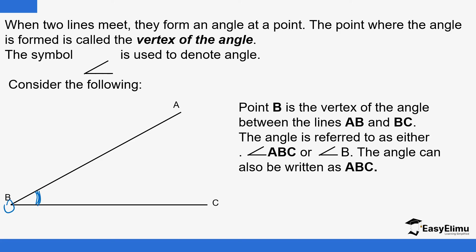The symbol is used to denote an angle. In the example, point B is the vertex of the angle between AB and BC, and the angle is referred to as either angle ABC or angle B. You can use either of the two to indicate that the angle is formed in between lines AB and BC.